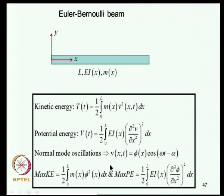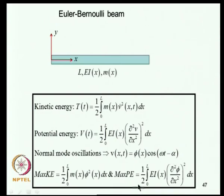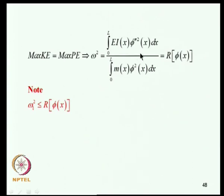For an Euler-Bernoulli beam with span L, flexural rigidity EI, mass per unit length M, and transverse displacement V, the maximum potential energy involves the integral of EI*(V'')^2 and the maximum kinetic energy involves M*(V_dot)^2. Equating maximum kinetic and potential energies gives the Rayleigh's quotient for the beam as the integral of EI*(Phi'')^2 dx divided by the integral of M*Phi^2 dx, which is greater than or equal to omega_1^2.